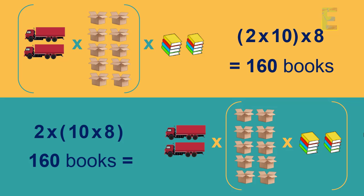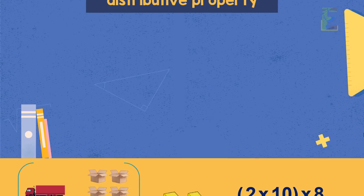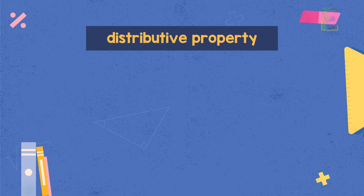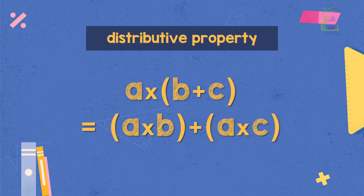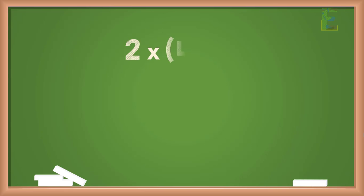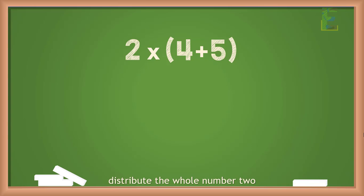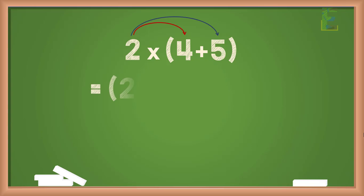Now let's proceed to the last topic: the distributive property. The distributive property shows that the multiplication of a whole number is distributed over the sum of whole numbers. For example, if we multiply 2 by the group (4 plus 5), we distribute the whole number 2 and multiply it by each member of the group individually. The equation becomes 2 times 4 plus 2 times 5.